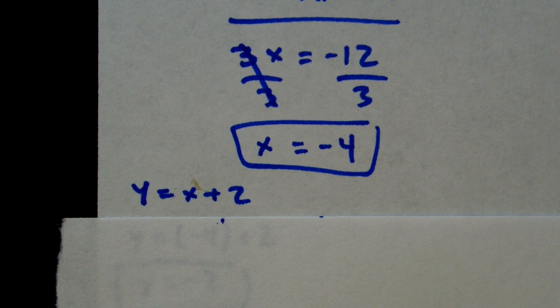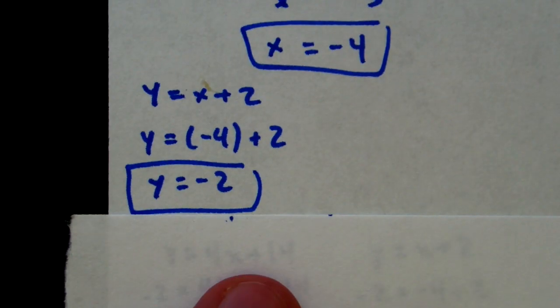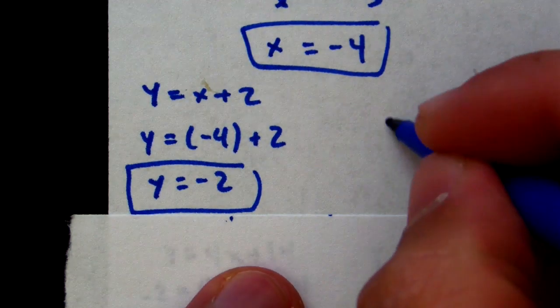Now, we go back to our original equations and we pick one of them to plug our x value in. The x plus 2 is much easier, so we go y equals x plus 2. We plug in negative 4 and we get y equals negative 2.